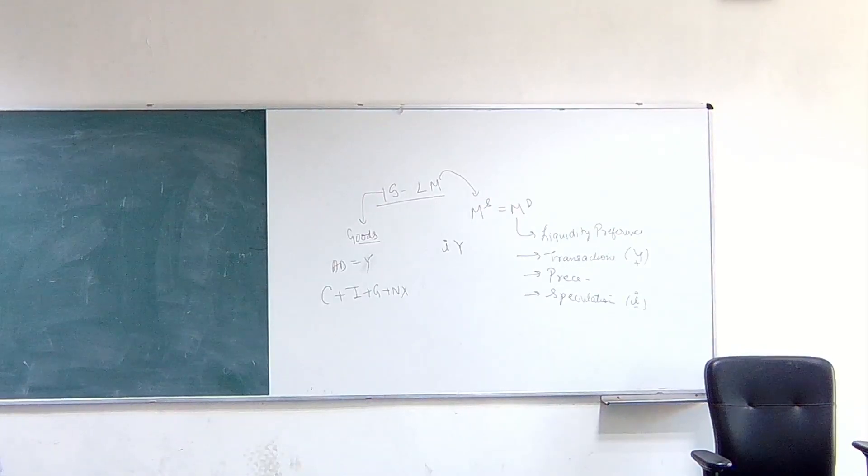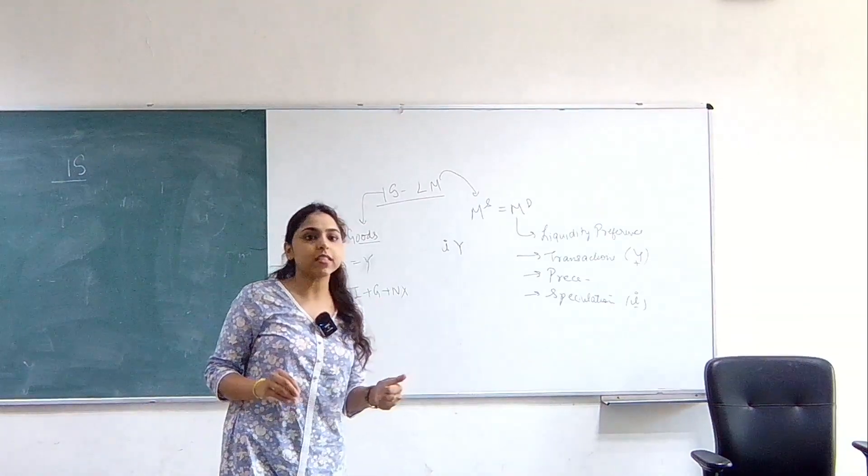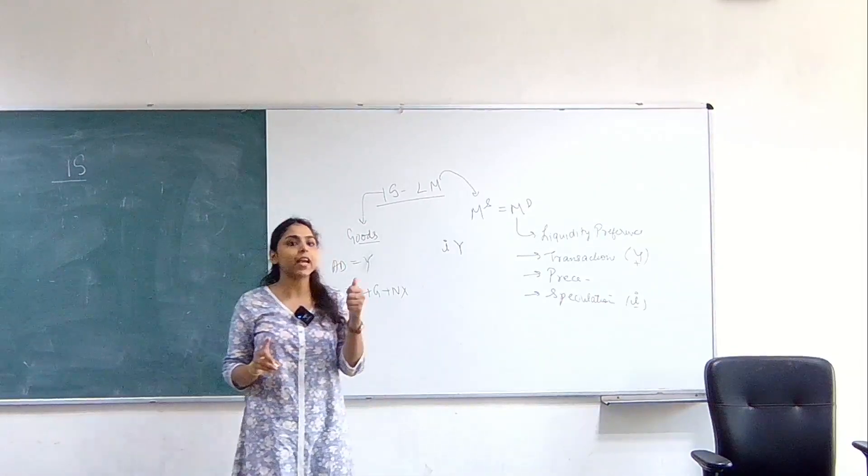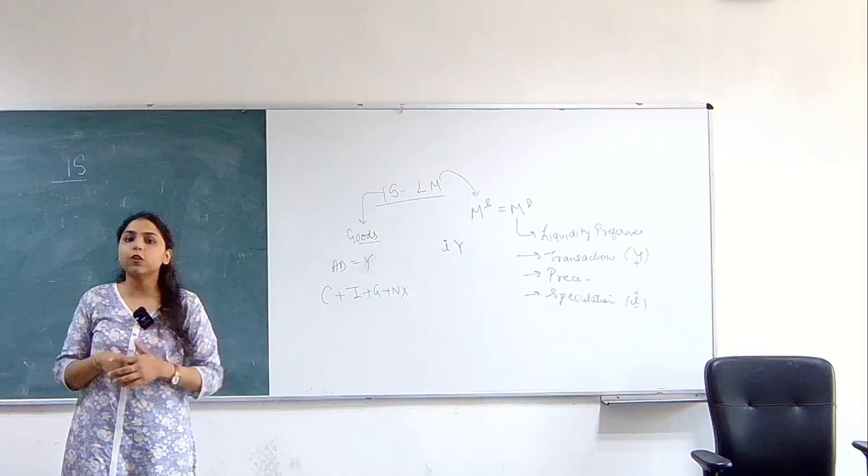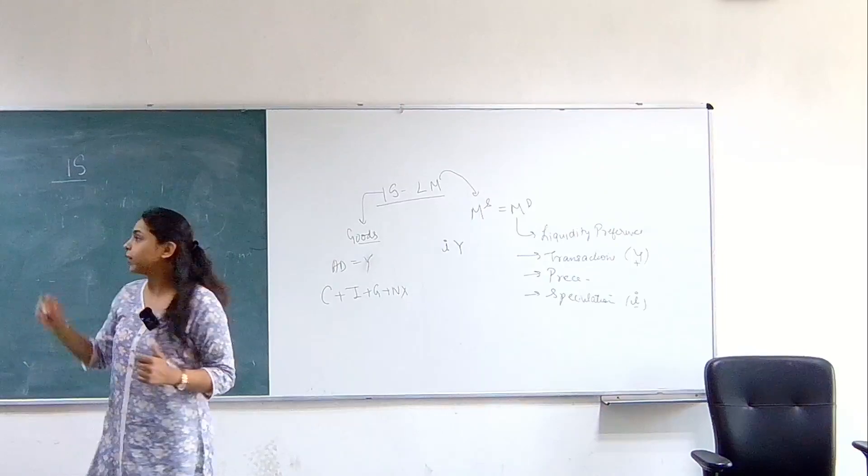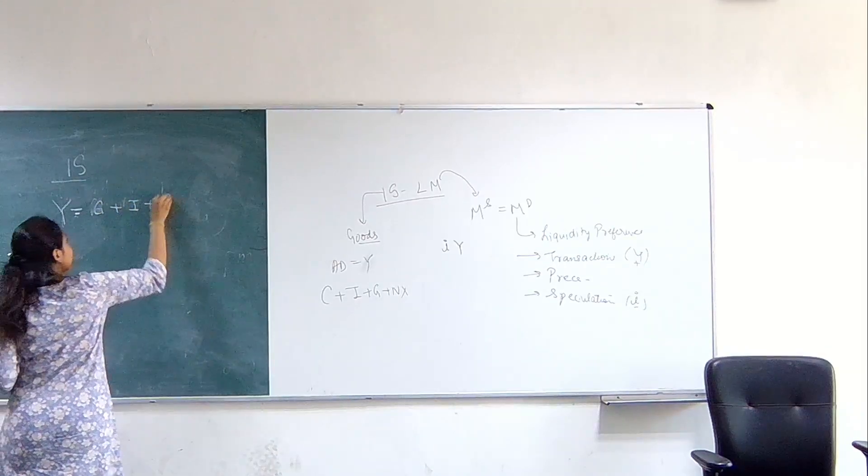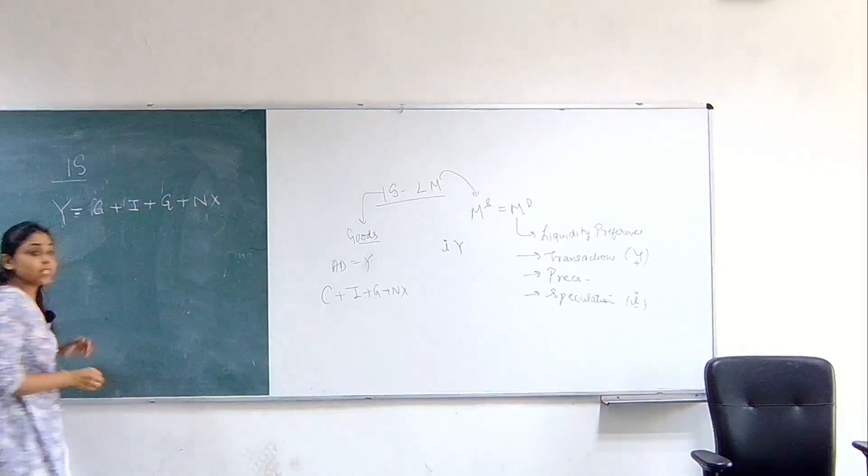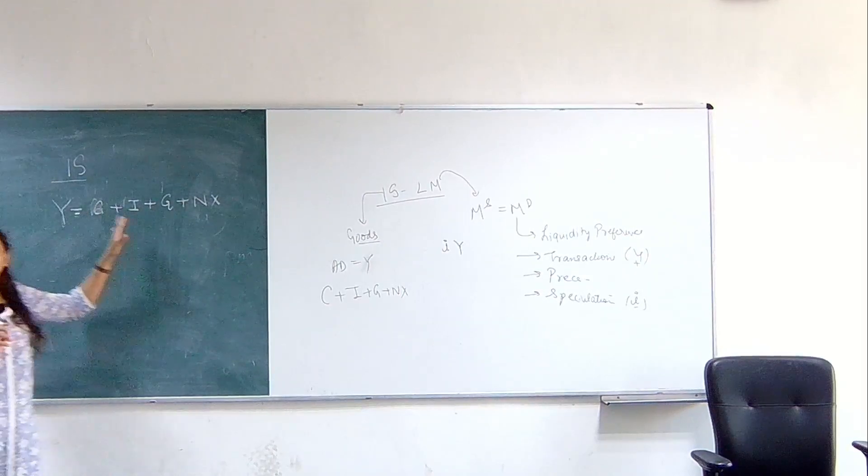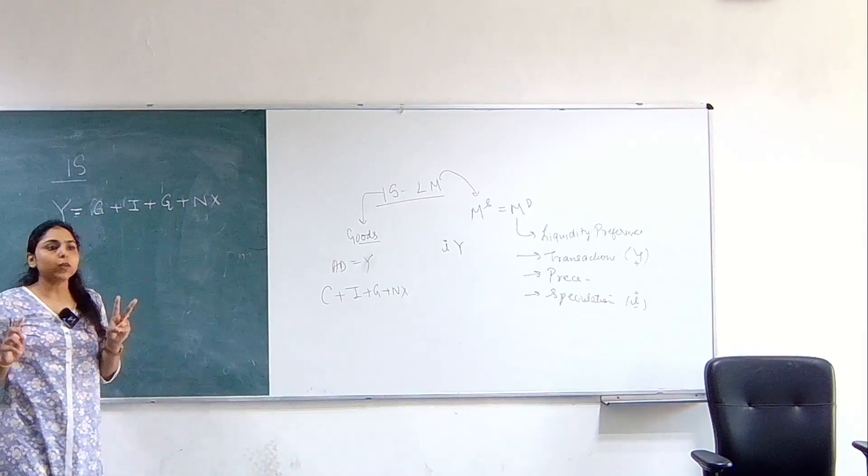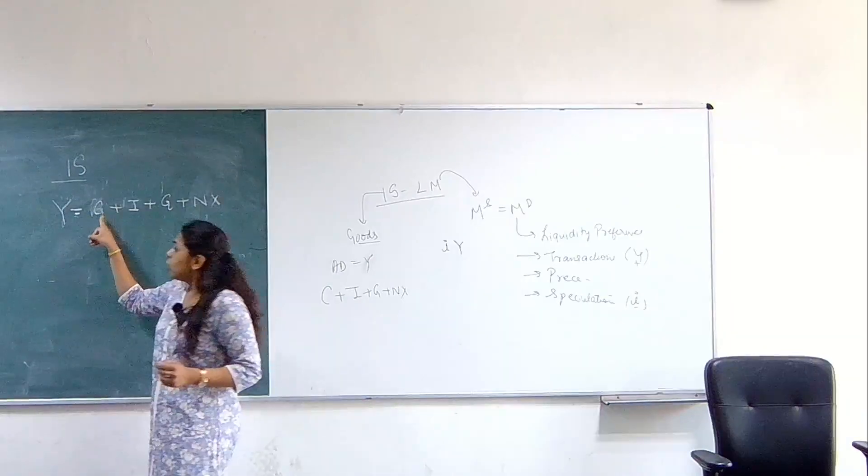So let's start with the IS curve. IS, again as I told you, is investment-savings. It gives you all those combinations of interest rate and income such that the goods market is in equilibrium. When our investments and savings are equal, our goods market is in equilibrium. So we know that output is equal to C plus I plus G plus NX. This is not the case always. This will happen only in equilibrium. This is my total output. This is my aggregate demand. When the two things are equal to each other, the goods market will be in equilibrium. If they are not equal to each other, the goods market will not be in equilibrium.